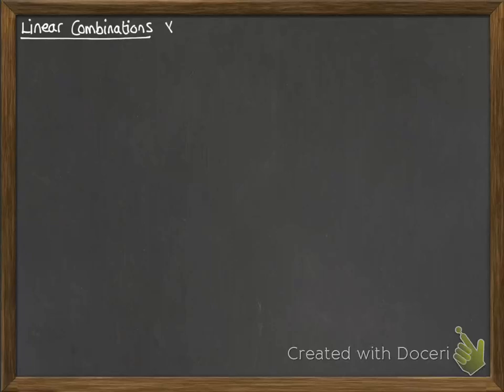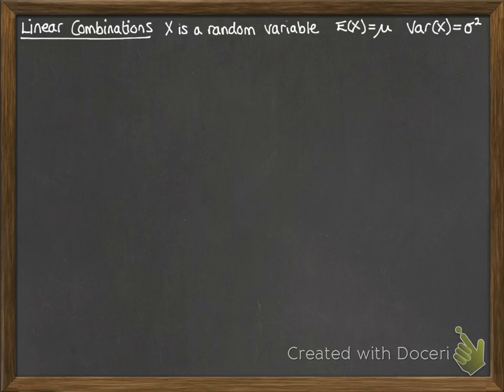Linear combinations. We're considering x to be a random variable with E(x) equals mu and variance of x equals sigma squared. Now what happens if you do Ax plus B, where A and B are constants? We are taking our x distribution, multiplying it by something and adding something on.